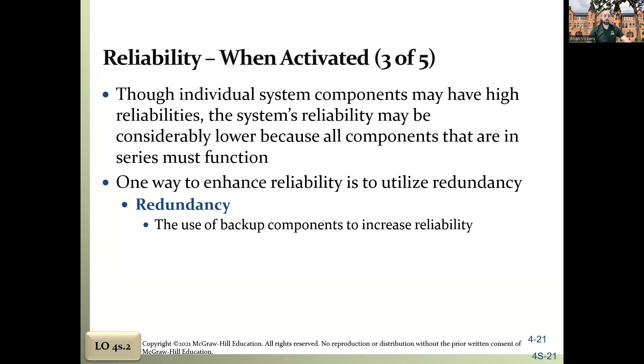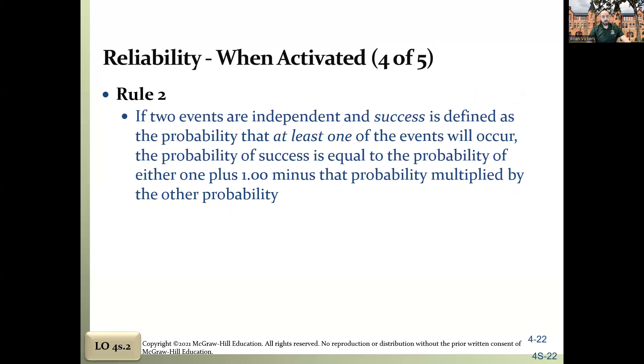You can reduce that deficit by using redundancy. Redundancy is a backup for any one of those individual components. If I've got button here and button here, and each one of them has a backup button, then my overall reliability goes up. Redundancy is the use of backup components to increase your reliability. If those independent events are defined as probability of at least one occurring, the probability of success is equal to the probability of either one plus one minus the probability multiplied by the other probability.